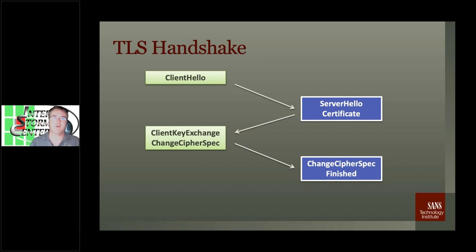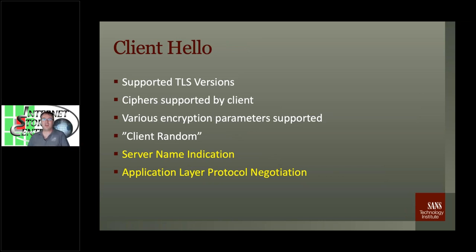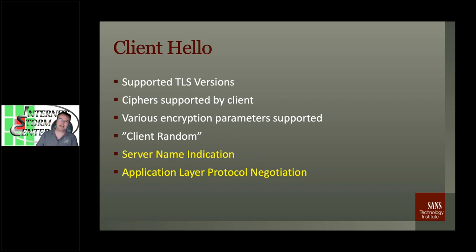The first two messages — the Client Hello and Server Hello — are not yet encrypted because we haven't established any keys yet. So there's still data I can collect from these. A couple of things we usually see in the Client Hello: supported TLS versions, which depends on the operating system and client being used; ciphers — different operating systems, clients, and TLS libraries support different ciphers; various other encryption parameters, compression, and the like; and some random data.